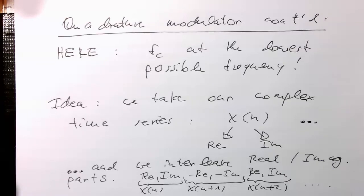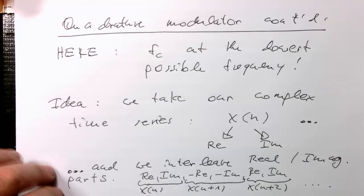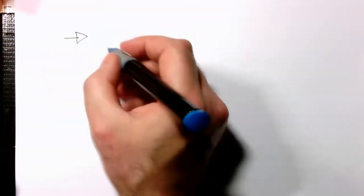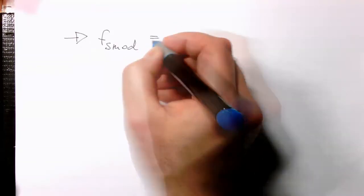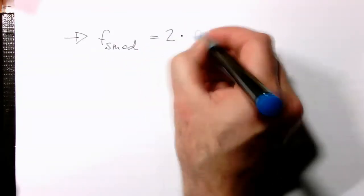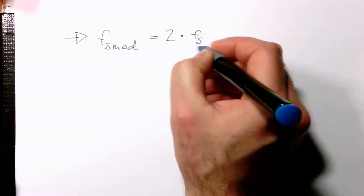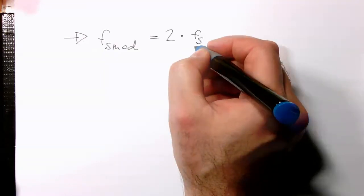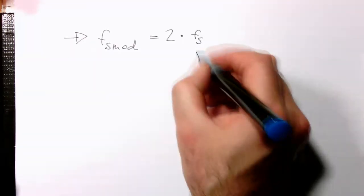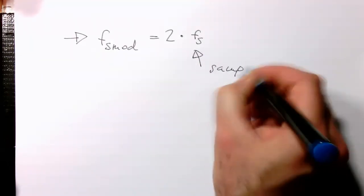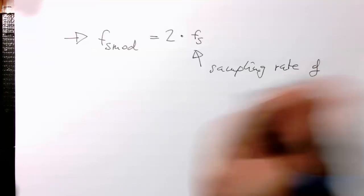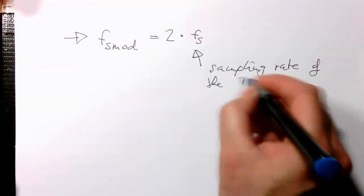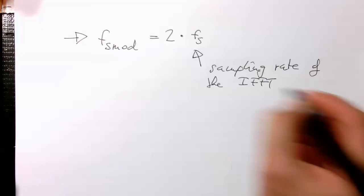So the question is, why does this make sense? We say that fs mod, the sampling rate of our modulator, is two times the sampling rate of our complex symbols. That's the sampling rate of the IFFT or our complex symbols.